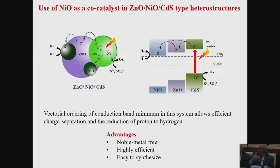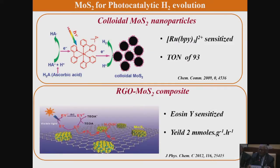People don't like platinum to be used, so we have replaced it with nickel oxide, which is an insulator. This is because the conduction band level of nickel oxide is just perfect for matching with the levels of zinc oxide, and we have been able to do some work using this strategy.